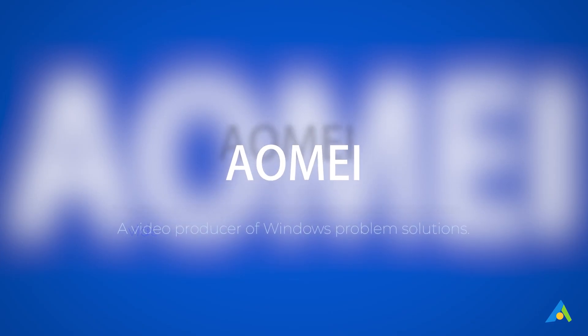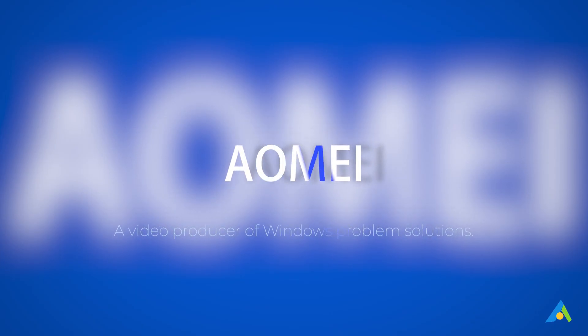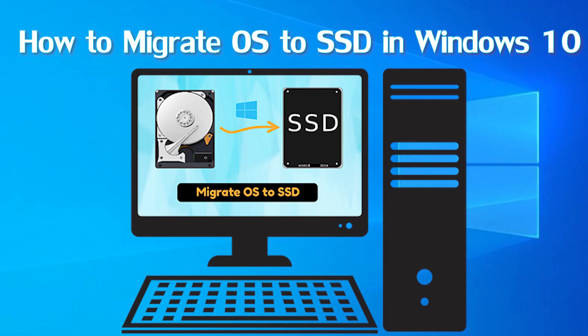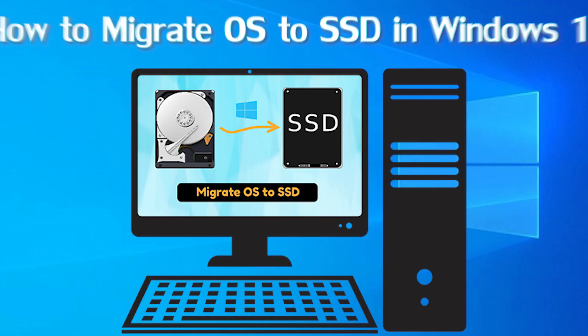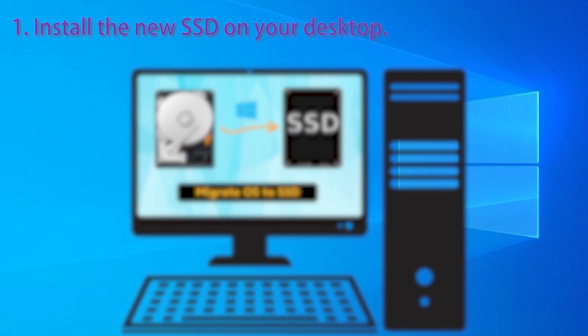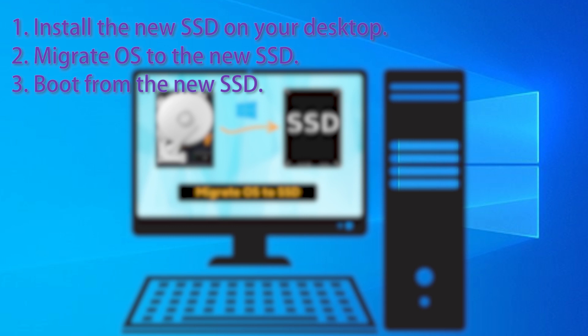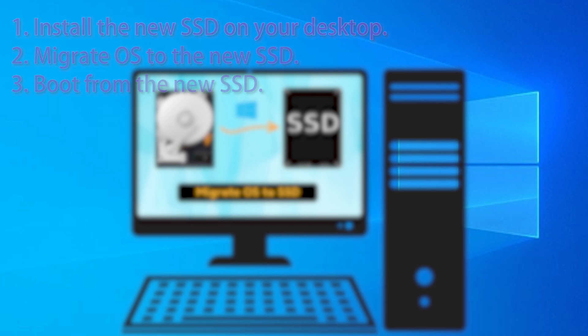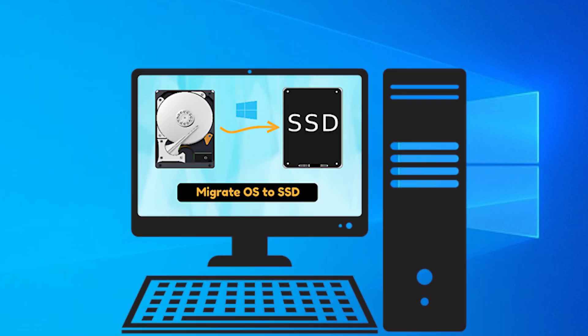Hey guys, thanks for watching AOMEI. In this video I will tell you how to migrate OS to SSD in Windows 10 on a desktop. There are 3 main stages: 1. Install the new SSD on your desktop. 2. Migrate OS to the new SSD. 3. Boot from the new SSD. Now let's learn the detailed steps.